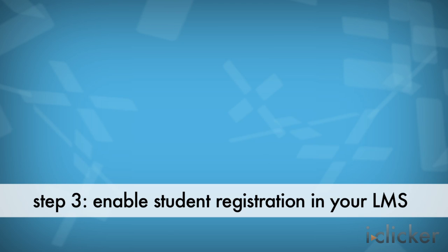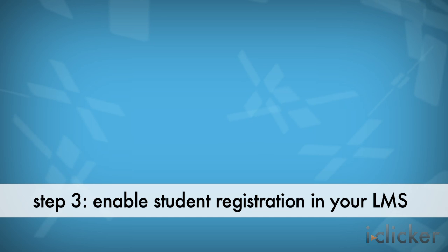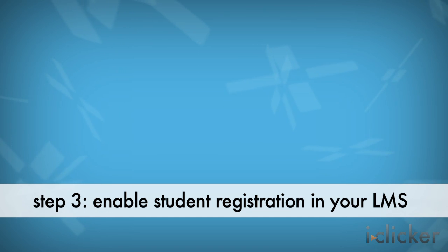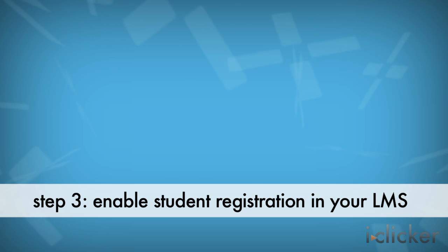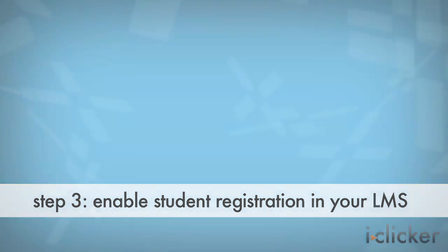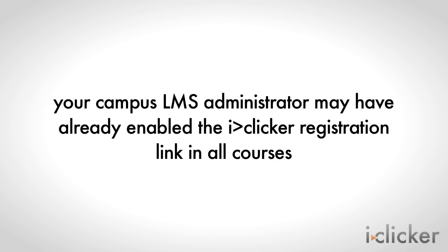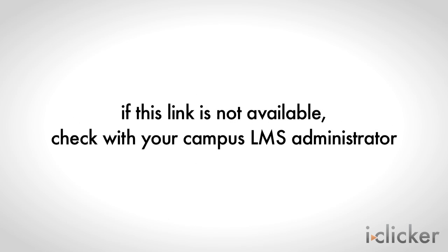Next, you'll want to enable student registration in your LMS. In order to receive credit for their iClicker responses, students must register their iClicker remotes, which will tie their clicker ID to their student ID. Registered iClicker remote IDs are automatically associated with student names in your LMS gradebook and in the iGrader application. Your campus LMS administrator may have already enabled the iClicker registration link in all courses. If so, you don't have to enable the link. If this link is not already available in your courses, please check with your campus LMS administrator for next steps.